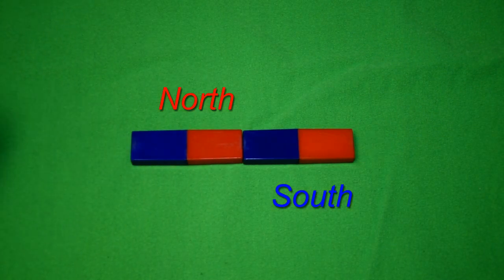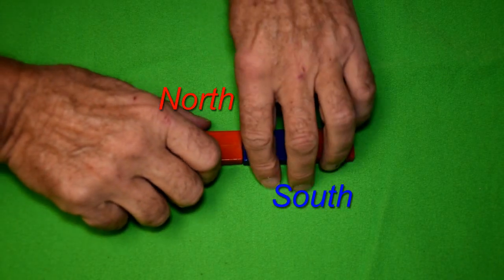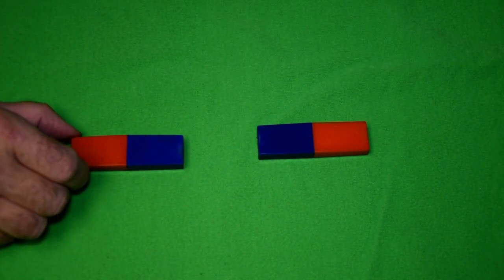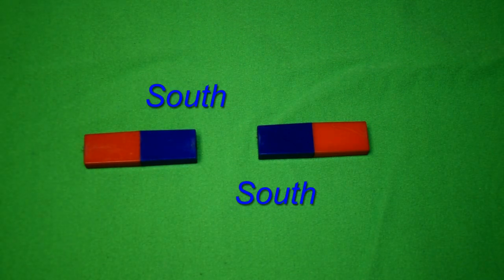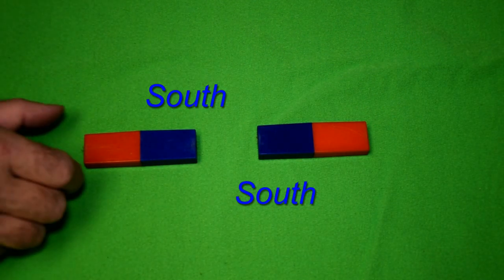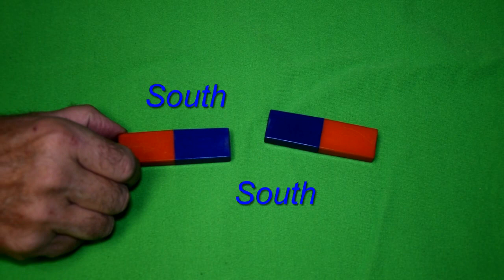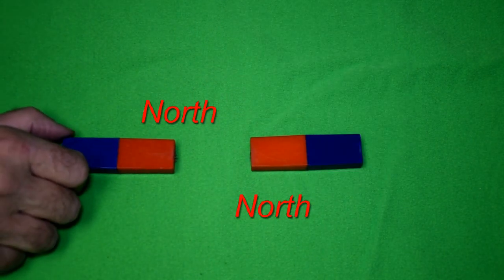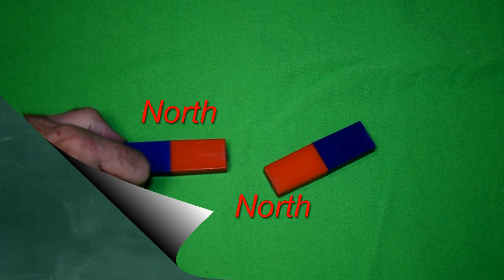A north and a south pole will attract each other. A south and a south pole will repel each other, and a north and a north will repel.